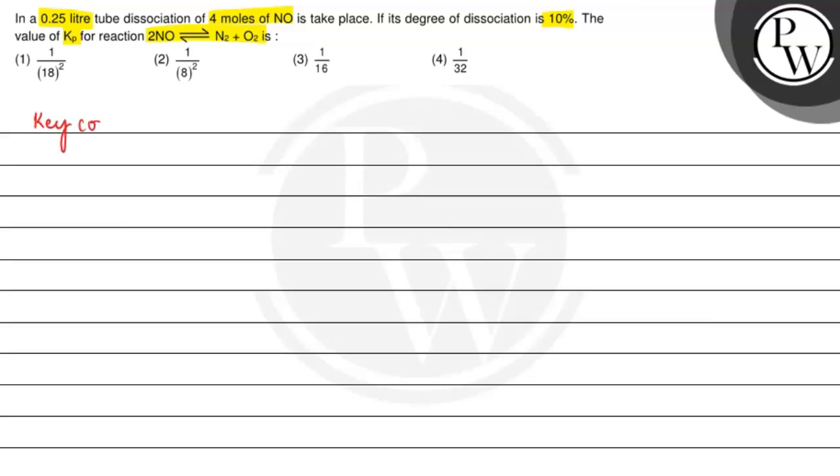The key concept used in this reaction is we should know the relationship between Kp and Kc. Kp is equals to Kc(RT) raised to the power del NG. Where Kp is equilibrium constant in terms of pressure, Kc is equilibrium constant in terms of concentration, R is gas constant and T is temperature. And del NG is moles of products in the gaseous state minus moles of reactants in the gaseous state.